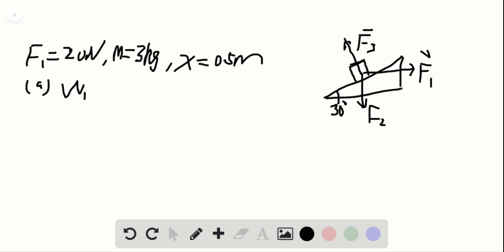The work done by the horizontal force, W1, is F1 times the horizontal displacement, which is 0.5 times cosine 30 degrees. F1 is 20 newtons.